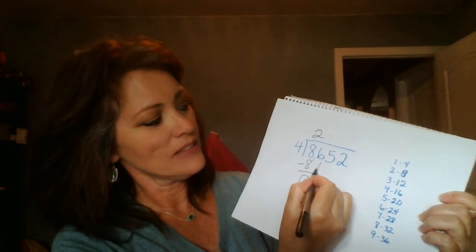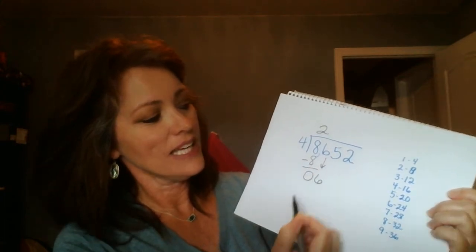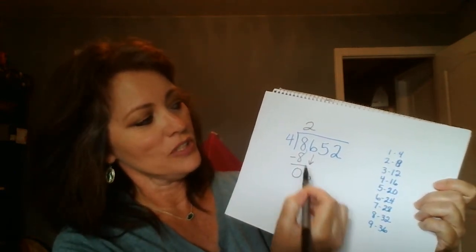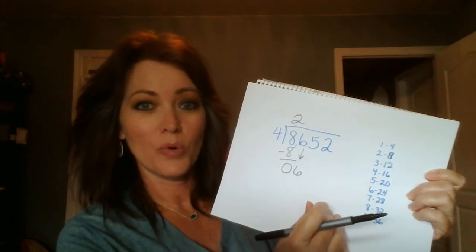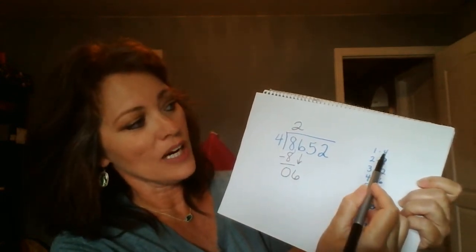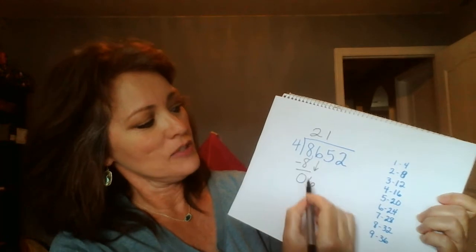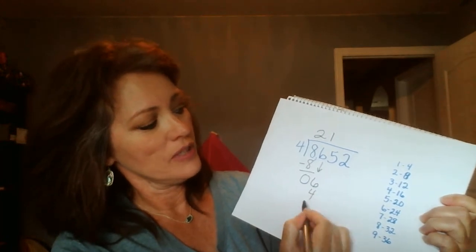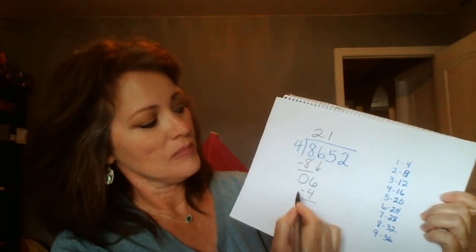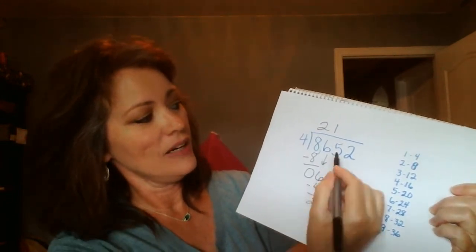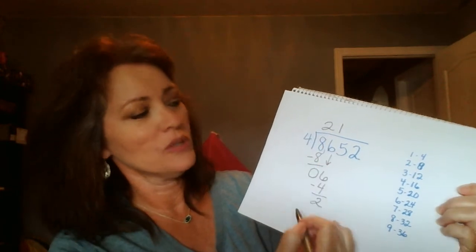Now we bring down the six and start over on divide. Six divided by four, you cannot go higher than six when you're solving this portion, so we have to stop at four, which is one. Six divided by four is one. One times four is four. Six minus four is two. Now two is less than four, so we go on.